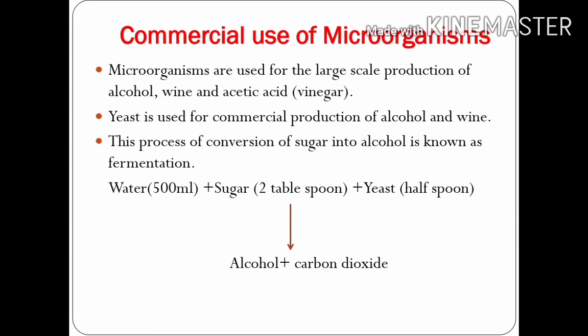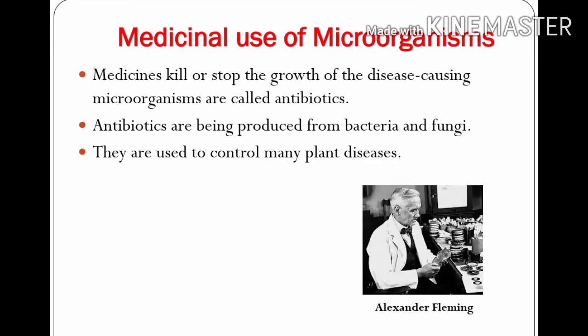This is how alcohol is prepared from various juices and grains. Microorganisms are also helpful in the field of medicine — they can protect us from a variety of diseases. Medicines that kill or stop the growth of disease-causing microorganisms are called antibiotics. Nowadays, a number of antibiotics are being produced from bacteria and fungi. Streptomycin and tetramycin are examples of famous antibiotics made from fungi and bacteria. Such antibiotics are used to cure a variety of diseases and are even mixed with the feed of livestock and poultry to check microbial infection in animals. They are also used to control many plant diseases.